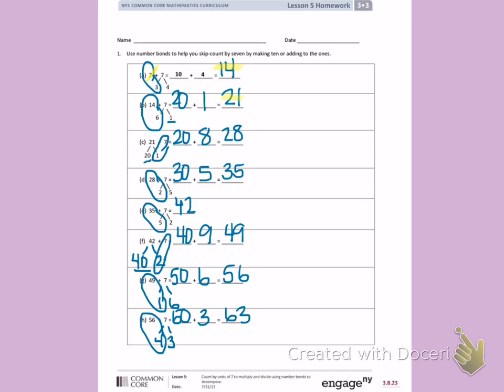Now I can skip count by 7s: 7, 14, 21, 28, 35, 42, 49, 56, 63. Have a great day. Thank you.